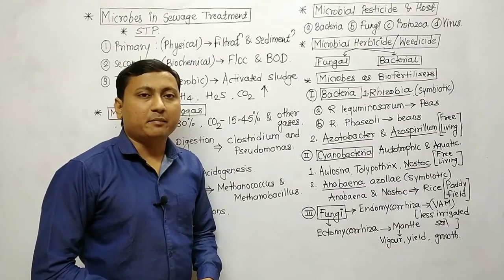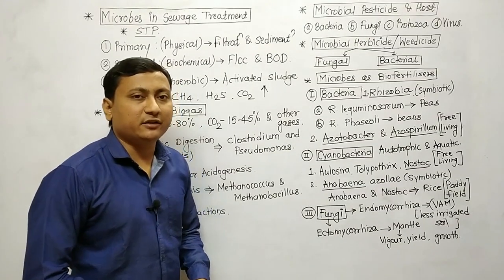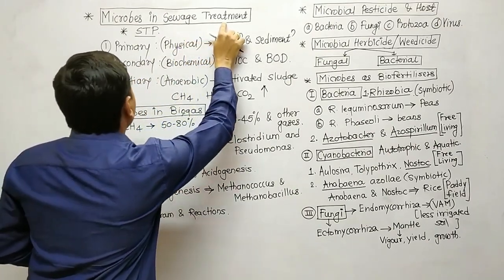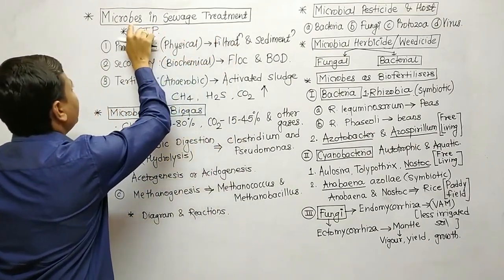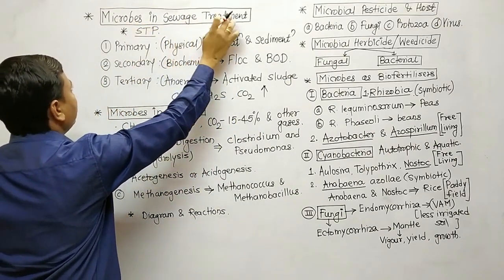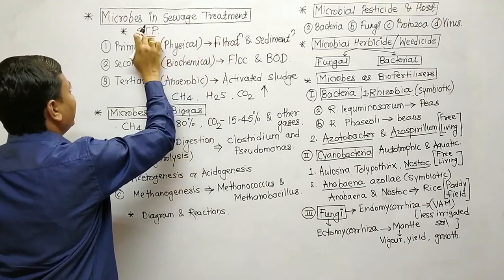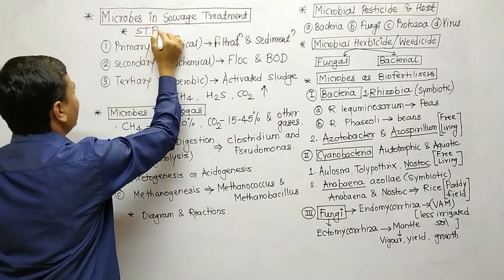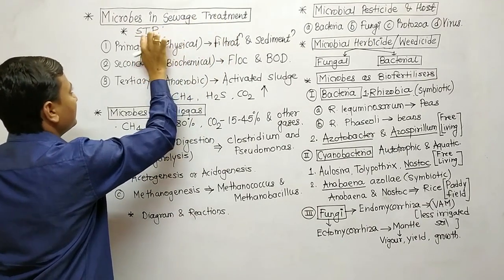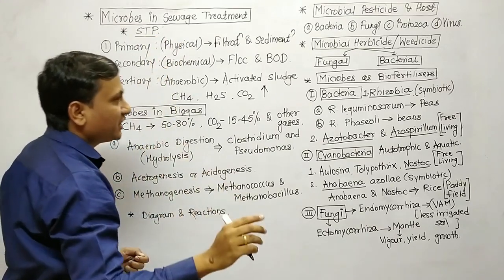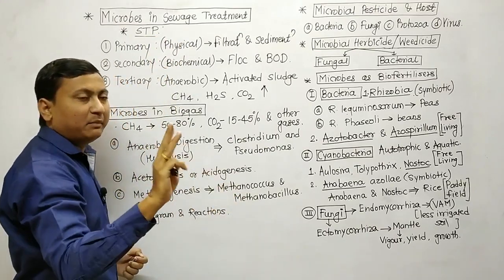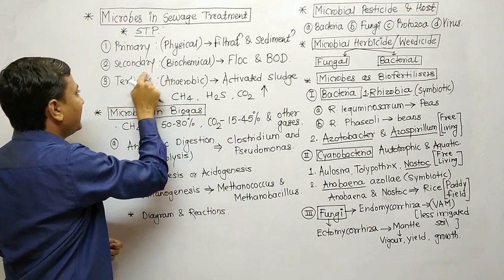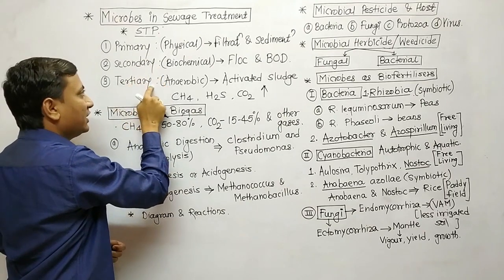The next topic is microbes in sewage treatment. Microorganisms are beneficial in sewage treatment. In cities, there are sewage treatment plants — STP stands for Sewage Treatment Plants. There are three basic steps: first, primary treatment; second, secondary treatment; and third, tertiary treatment.